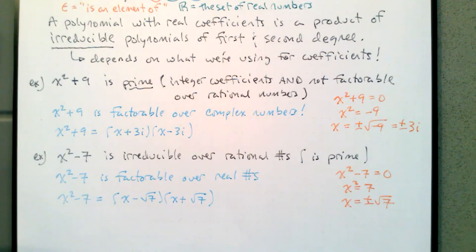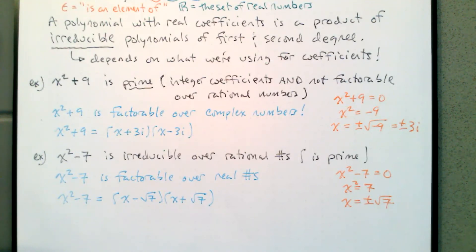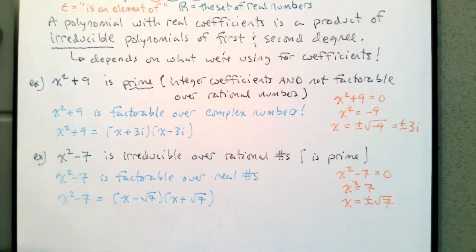Here's an important thing to note. Recall yesterday we said that the number of turns that a graph of a polynomial will make is less than the degree by an odd number — so one less, or three less, or five less, and so on. The reason for that is that the turns are going to be determined by the zeros of the derivative.